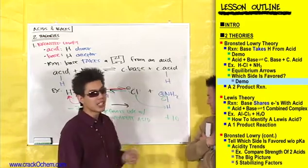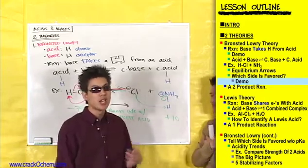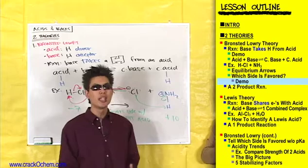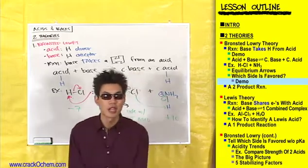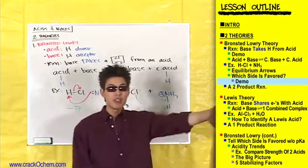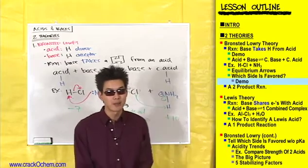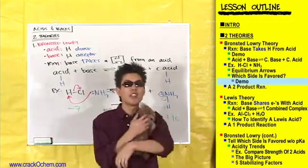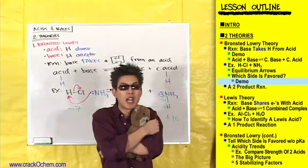With a pKa of plus 10, I don't want to give up my hydrogen. This is the deal with strong and weak acids. Strong acids are very willing to give up their hydrogens, just like strong men give up their teddy bears — they just give it up. Weak acids, like weak little boys, don't want to give up their teddy bears; they don't want to give up their hydrogen.